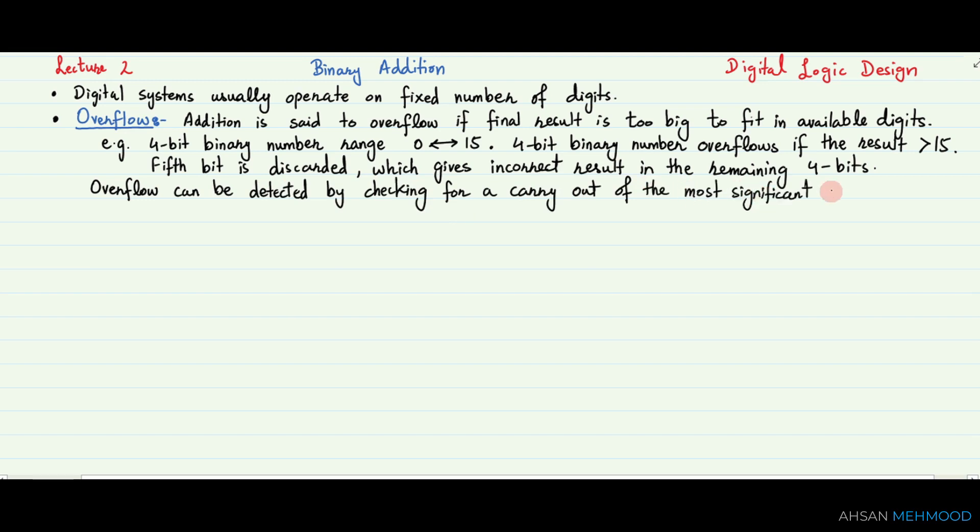Now we will go through an example of overflow. In this example, we will compute the sum of 1101 base 2 and 0101 base 2, and we will check if overflow occurs. The solution is given below, and the sum is 10010 base 2. This result overflows the range of 4-bit binary numbers.